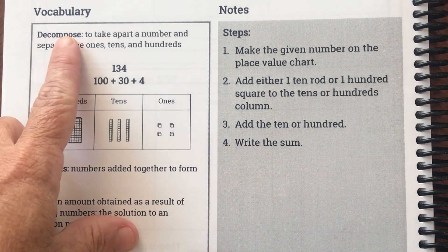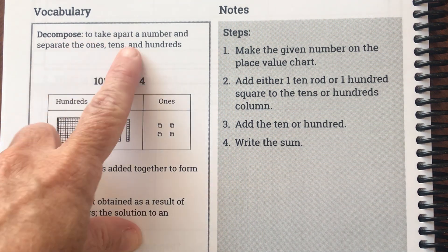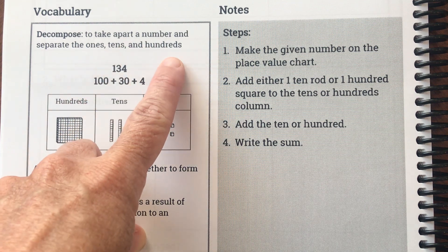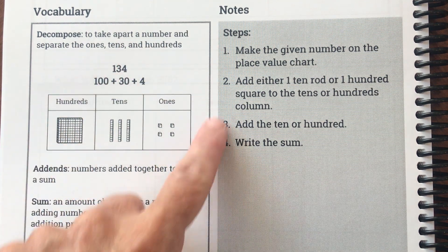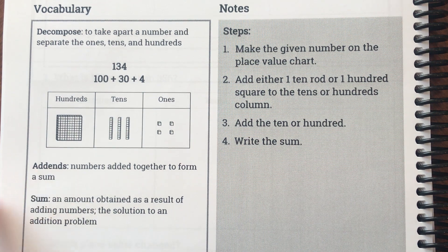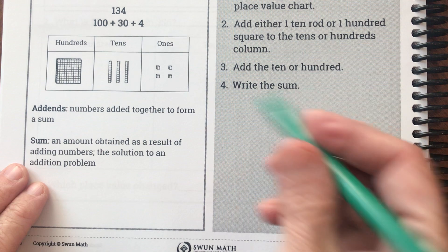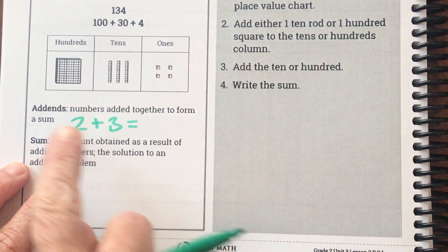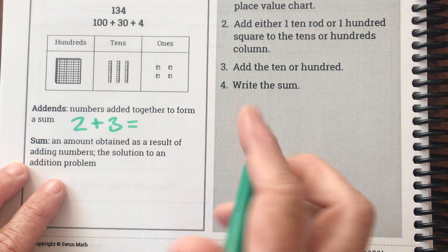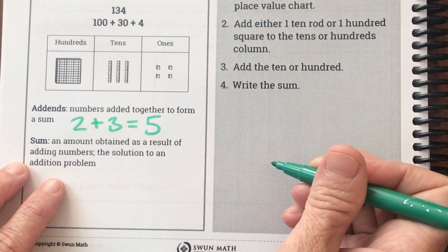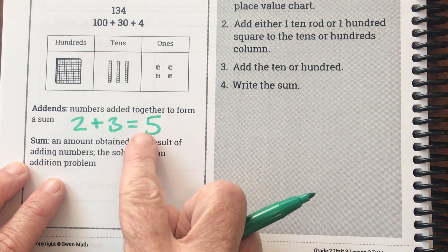Remember, they remind us that 'decompose' means to take apart a number and separate the ones, tens, and hundreds. This is what we did yesterday as we drew them using base 10 blocks. They remind us that our addends are what we're adding together — so two plus three, those would be our addends — and then our answer or result is called our sum.